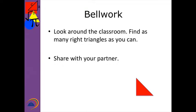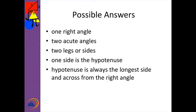Welcome back. I'm sure you found quite a few right triangles in your classroom. Some right triangles — remember they have to have one right angle. A right triangle has to have two acute angles, and remember an acute angle is an angle that is greater than zero but less than 90. They have two legs or sides, and the longest side is the hypotenuse. Those are some terms you need to remember from junior high or from your geometry class.